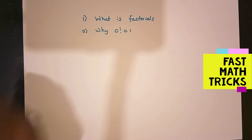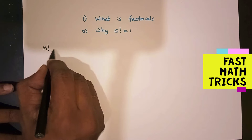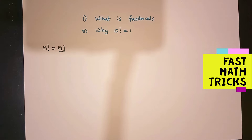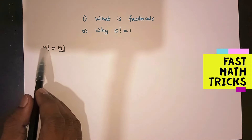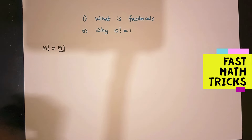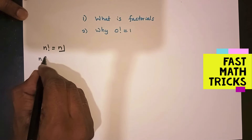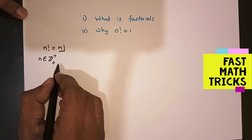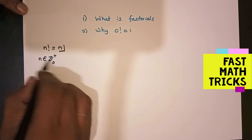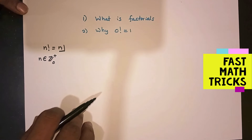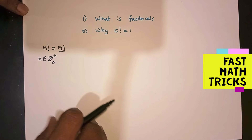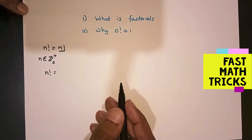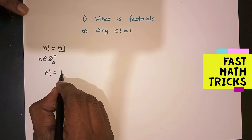First of all, let's see what is factorial — the definition and the notation. We represent it as n factorial. Here, n is a non-negative integer — a positive integer including zero. Factorial is defined only for non-negative integers.